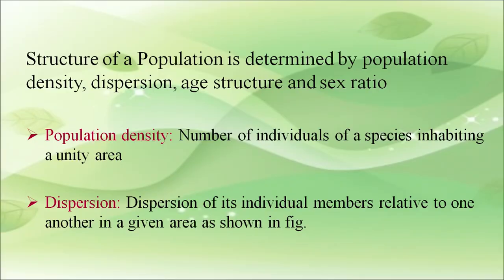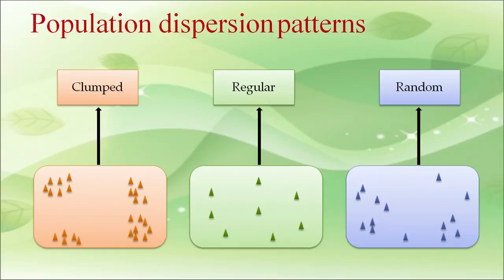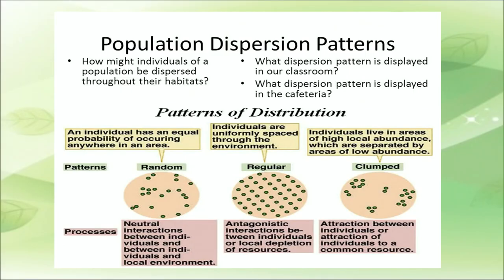The structure of a population is determined by population density, dispersion, and sex ratio. Population density means the number of individuals of a species inhabiting a unit area. Dispersion refers to the distribution of individual members relative to one another in a given area — this can be clumped, regular, or random.